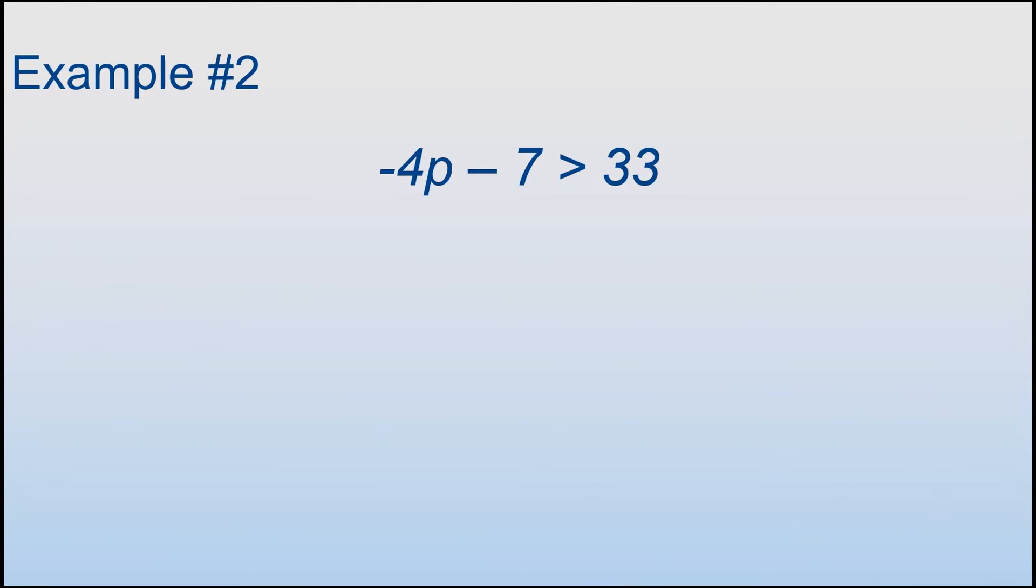Example number 2. I'm going to add 7 to both sides. This cancels out. I have -4p > 40.